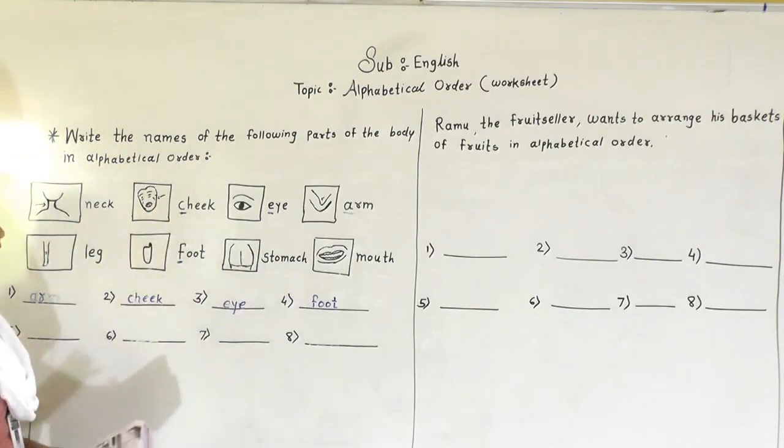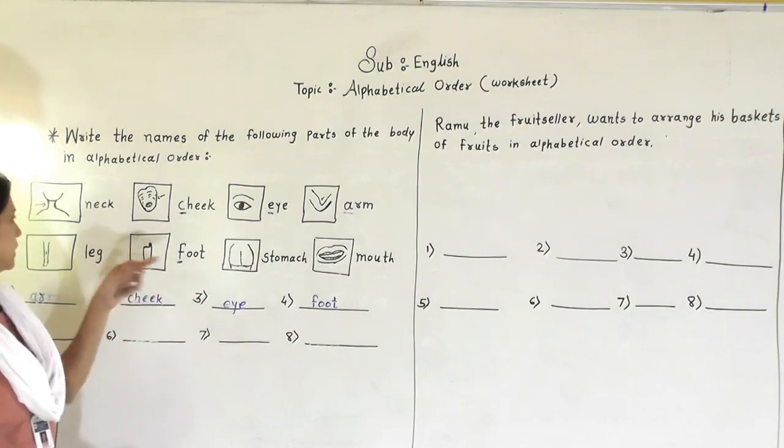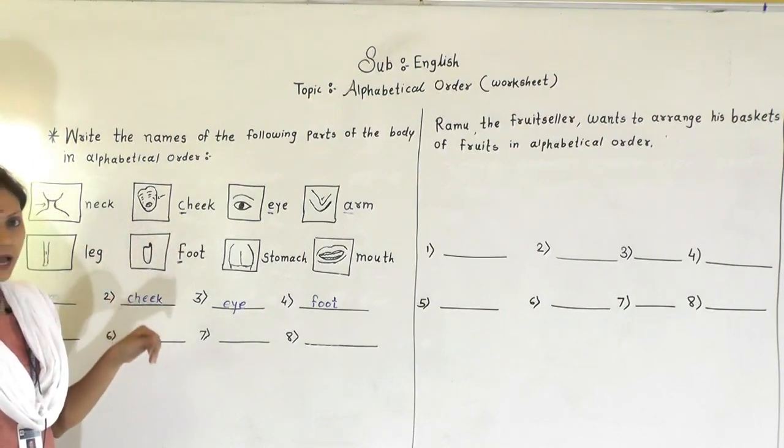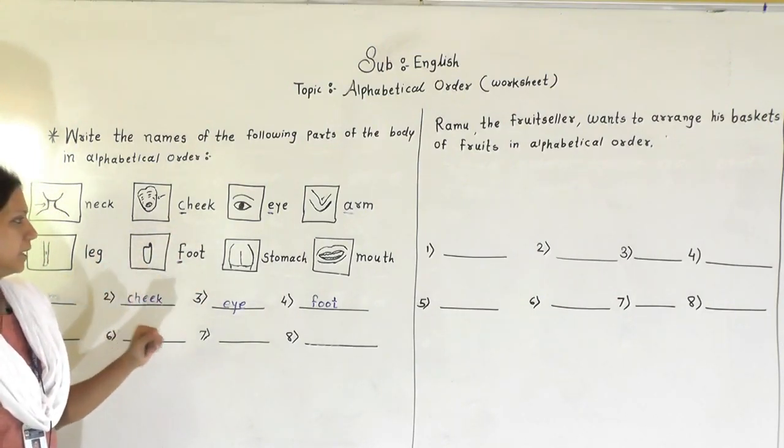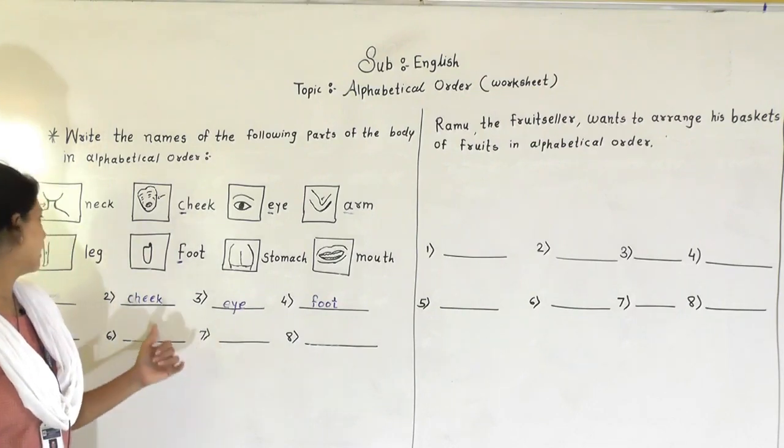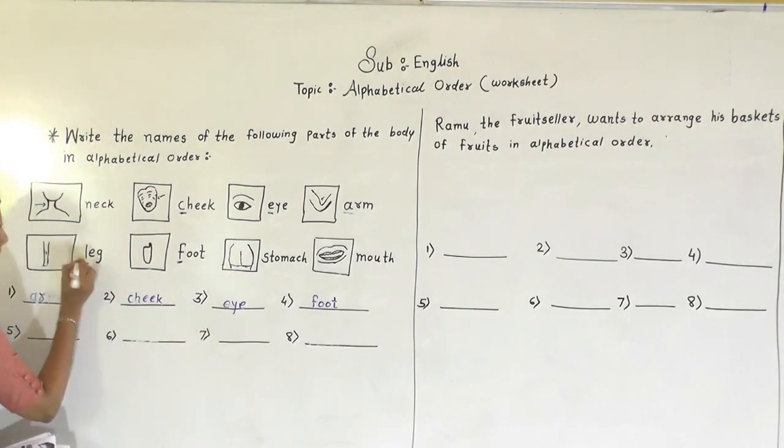A, B, C, D, E, F, G, H, I, J, K, L. Here I got L. So next word is leg. L-E-G.